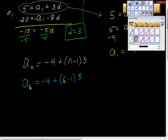We said d is 3. So 6 minus 1 is 5. 5 times 3 is 15. So we have negative 4 plus 15 equals 11. So the sixth term is 11. Not bad, right?